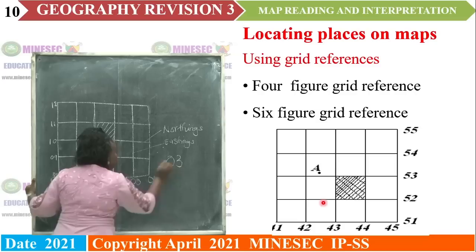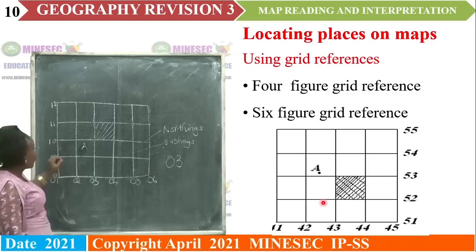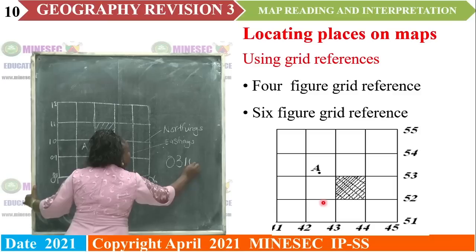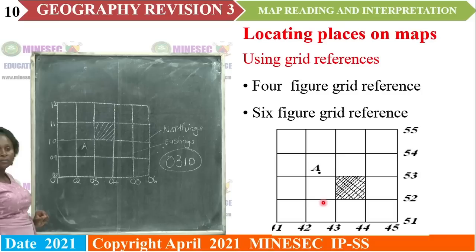That is our easting figure. Then we move on to the northings. In which northing values do we have the shaded portion? We have it between 10 and 11. We take the smaller value, which is 10. This gives us our four-figure grid reference — this shaded portion is found in grid square 03, 10.